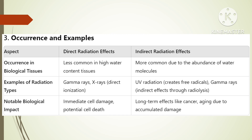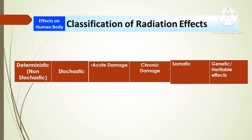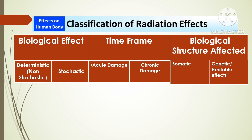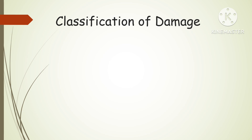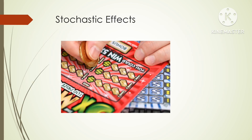Now we will read about the classification of radiation effects on the human body. On the basis of biological effects, time frame, and biological structure affected, we may categorize radiation effects. There are two fundamental categories of radiation-induced biological effects: stochastic and deterministic. The chief difference between these two categories is the dose threshold. Stochastic effects don't exhibit any dose threshold, whereas deterministic effects can only be manifested when radiation dose exceeds a certain threshold. Diagnostic radiation doses place the person at risk of stochastic effects, but not deterministic effects.